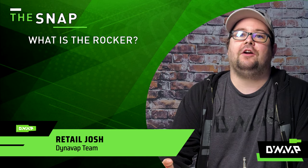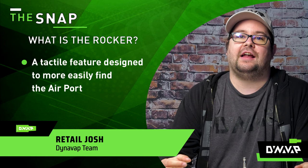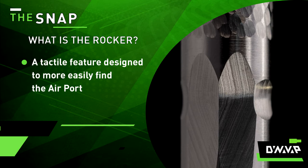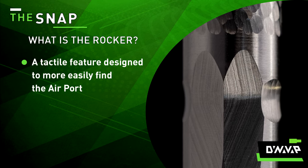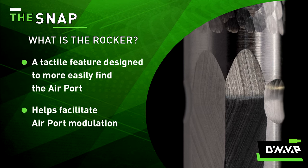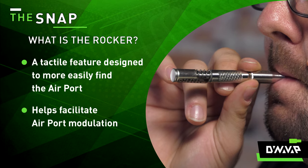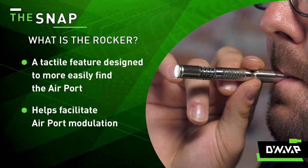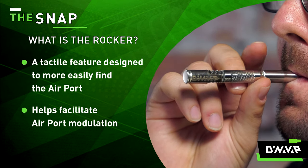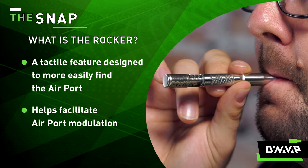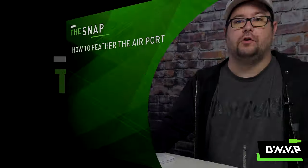What is the rocker? The rocker is a tactile feature designed to help more easily locate the airport. The rocker also serves the purpose of facilitating airport modulation, whether it be through the feathering or rocking, either to produce rapid pulses or steady consistent flow to cool and condition your vapor.